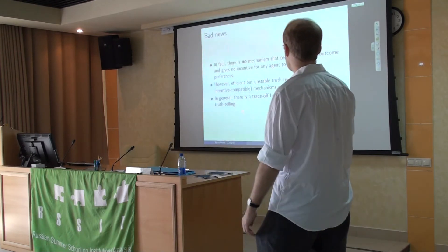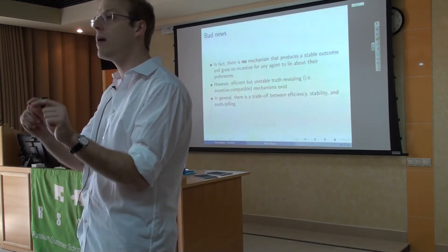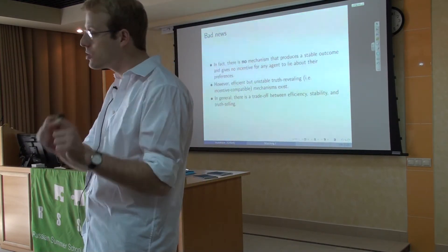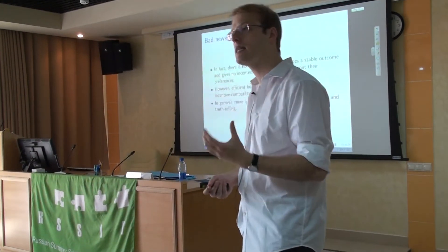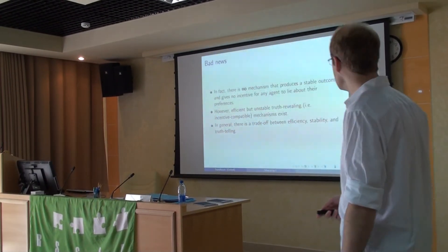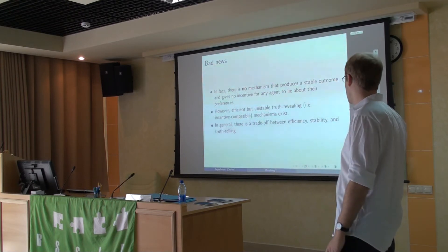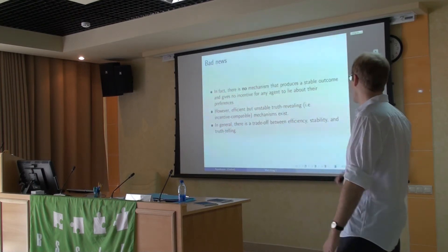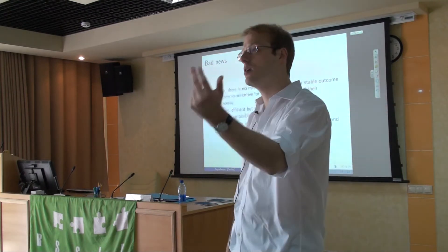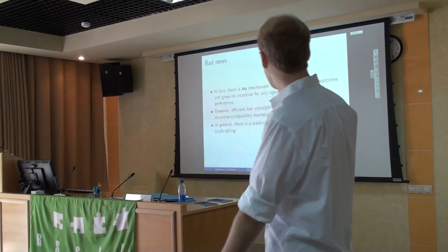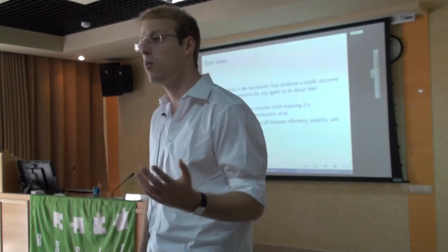There is no mechanism like this - in the same way as Arrow's Impossibility Theorem tells you there is no perfect way of running an election. This tells you the same thing: there is no perfect way of running a market or running a centralized clearinghouse. You need to make trade-offs. You can have something that is efficient but unstable. There are algorithms that give you efficiency but not stability. But remember, what we really care about is stability. Because if they are not stable, they will unravel - and we know this from actual empirical studies. The markets that are not stable, they unravel.